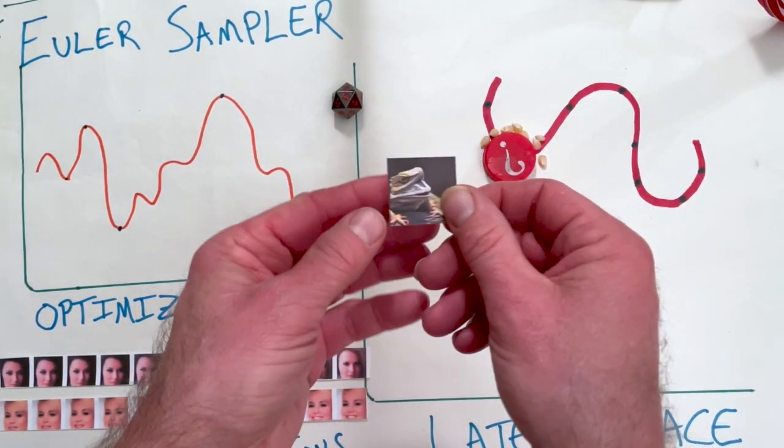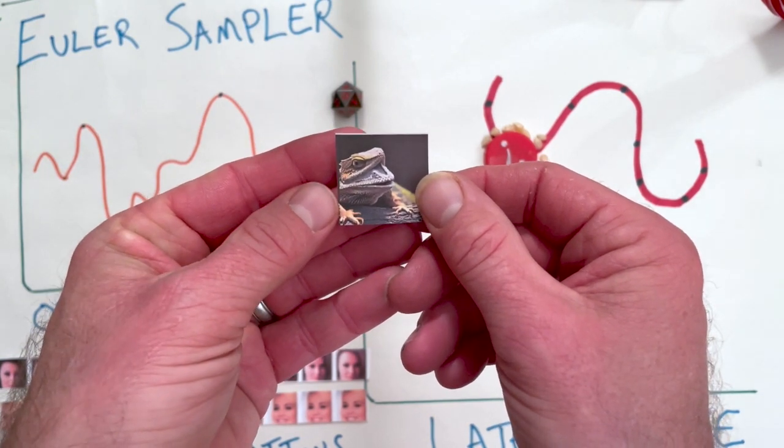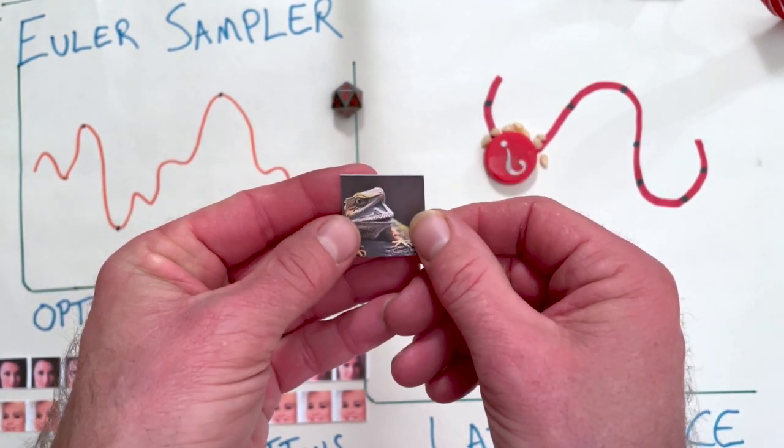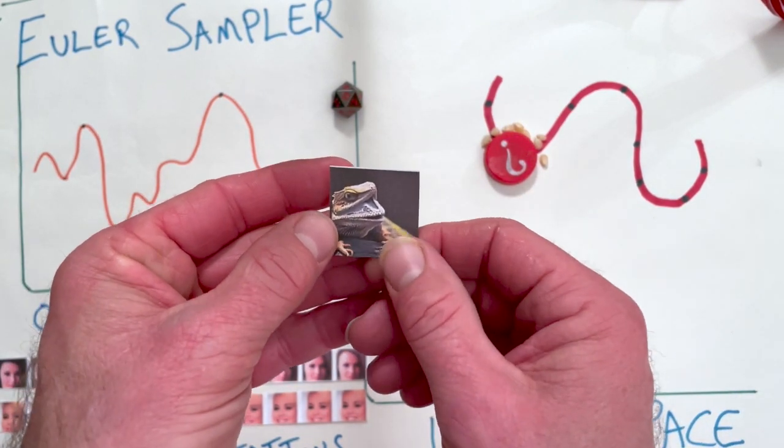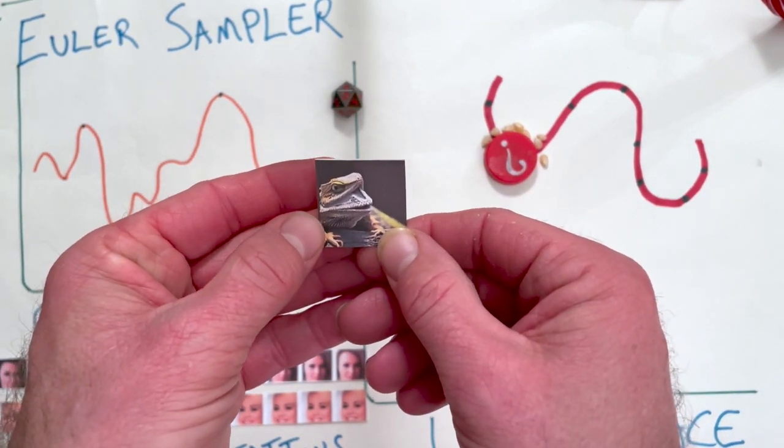And there you go, our final image, a mutant bearded dragon. Sometimes when you're moving through the latent space, you average images together and you get extra limbs and appendages. That's why it is.